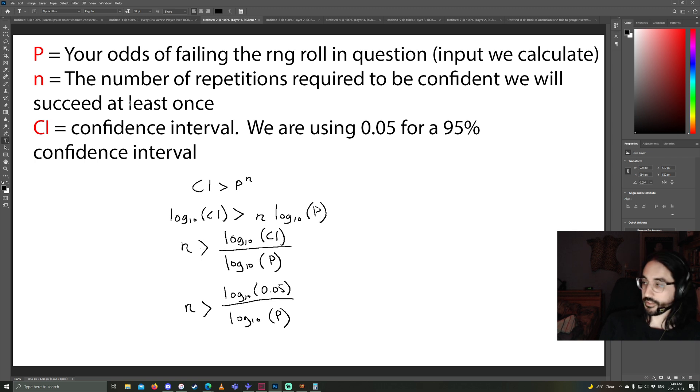And then n is what we're trying to solve for. It's the number of repetitions we need to repeat in order to be very, very confident that we will succeed in whatever this scenario is at least one time. We'll succeed at least once. And CI is the confidence interval.